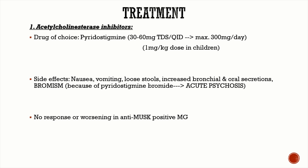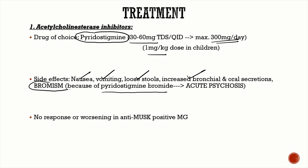Treatment of MG includes acetylcholinesterase inhibitors, immunotherapy, and thymectomy. Acetylcholinesterase inhibitors like pyridostigmine prevent breakdown of ACh at the NMJ, increasing its availability. Dose: 30–60 mg three to four times daily, maximum 300 mg/day; pediatric syrup at 1 mg/kg. Side effects include increased bronchial and oral secretions. In very high doses, pyridostigmine bromide can cause bromism presenting as acute psychosis. Do not give pyridostigmine to anti-MuSK-positive patients.